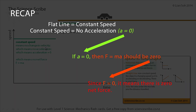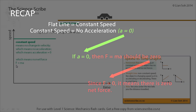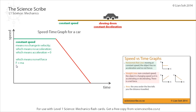Just to recap, if something does have a constant speed then it means that its velocity isn't changing, and if its velocity isn't changing it means it's not accelerating or decelerating, which means that a value for acceleration would have to be zero. Remember F equals ma, and if a is zero then no matter what mass the car has, anything times zero is zero. So if there's no acceleration, I could say it has no net forces acting on the car.